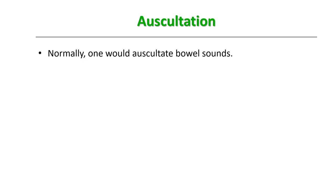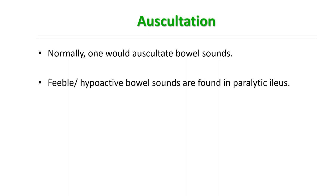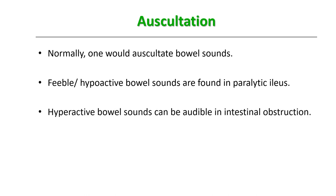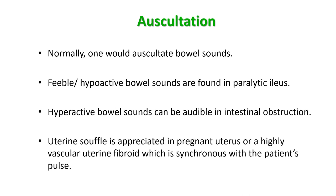Auscultation: we talked about it in detail in obstetric history taking as it is very important there — one auscultates fetal heart sounds. But in gynecological history taking, one would normally auscultate just the bowel sounds. Bowel sounds can be feeble or hypoactive in a patient of paralytic ileus, and hyperactive in a case of intestinal obstruction. Uterine souffle is appreciated in a pregnant uterus or in a highly vascular uterine fibroid, and it is always synchronous with the patient's pulse.